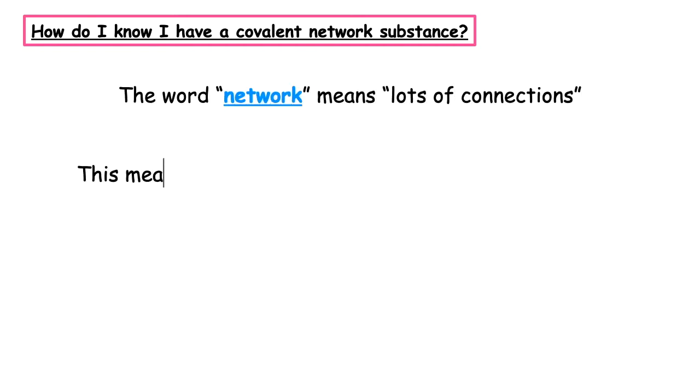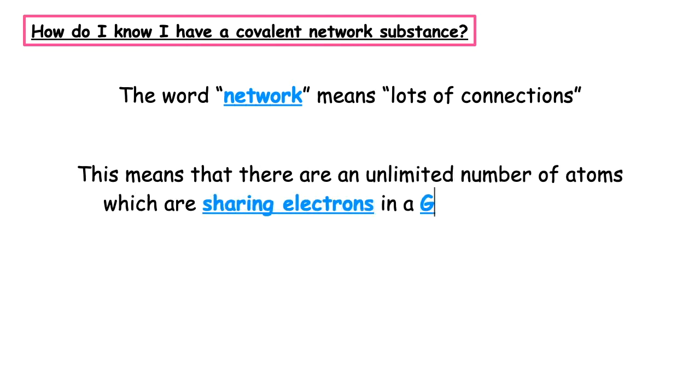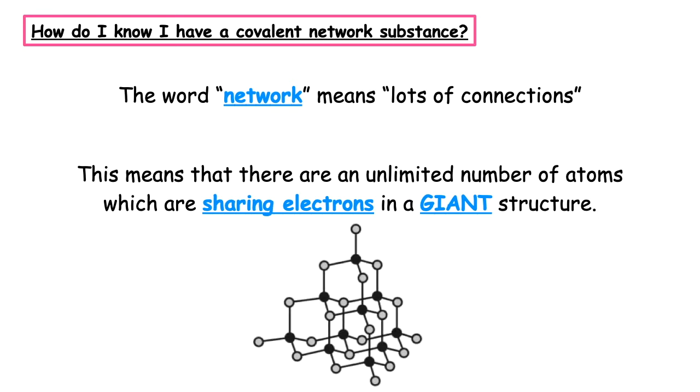How do I know that I have a covalent network substance? The word network means lots of connections. This means there are an unlimited number of atoms which are sharing electrons in a covalent bond, and they are found in a giant structure. The visual representation of this is shown here. You need to know this diagram for your exam.